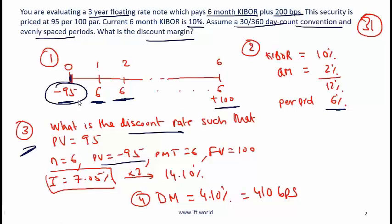PV is minus 95, that's the price of the bond at time 0. Payment is 6, that's the coupon payment. Future value is 100. You compute the interest rate and you will get 7.05%. This is the rate for one six-month period.